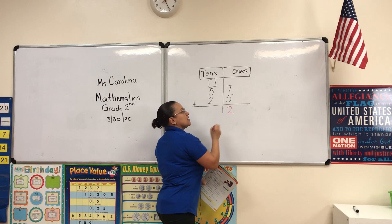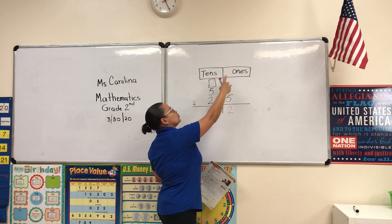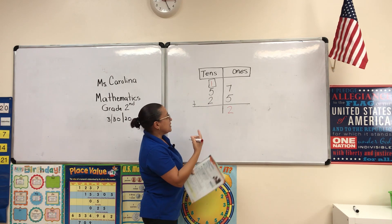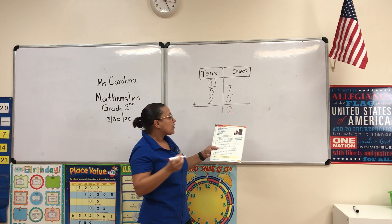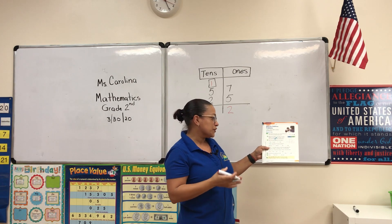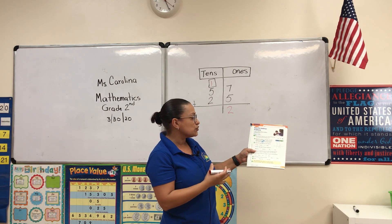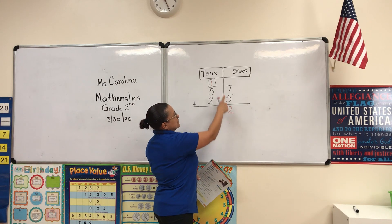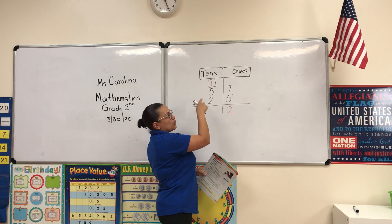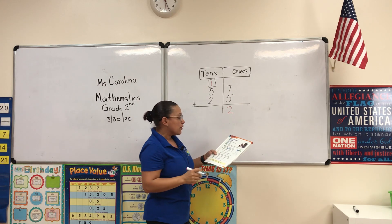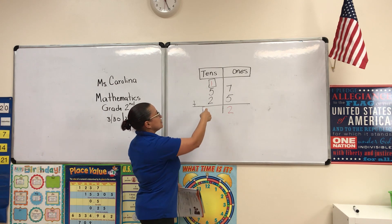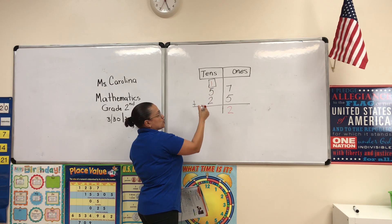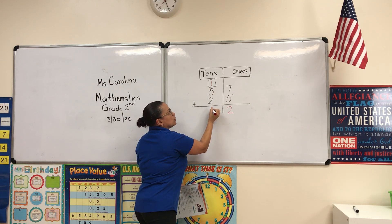Now we add up. Your 2 goes into the ones and your 10 goes into the tens — that's regrouping. Are there 10 ones to regroup? Yes. We regroup that 12: the 2 stays in the ones and the 1 ten goes into the tens column. Then we rewrite it and add up.